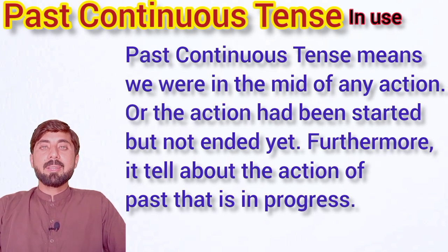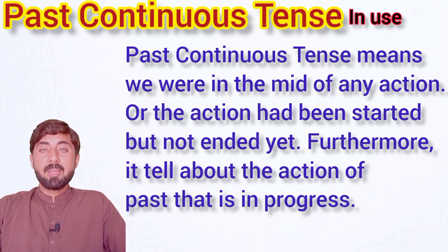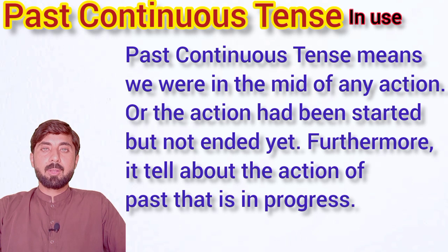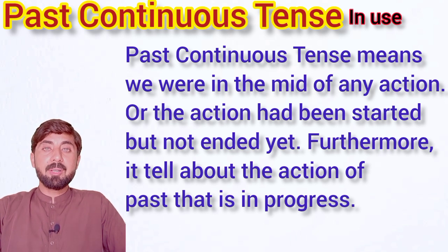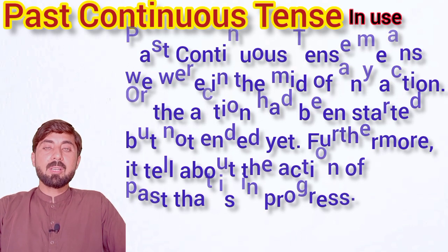When we talk about past continuous tense, it means we are talking about something that was happening in the past — that action was not completed yet. Our action was in progress. We were in the middle of the action. Now I am going to give you some examples which will help you understand that concept: we were in the middle of any action in the past, when an action was in process. It was not completed. It had already been started.